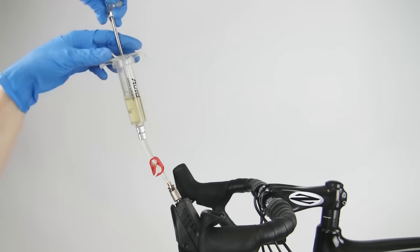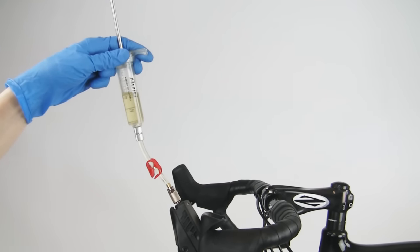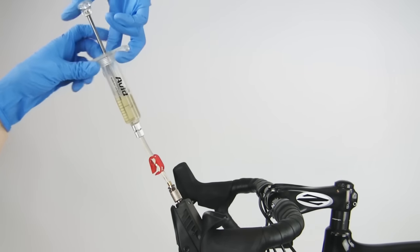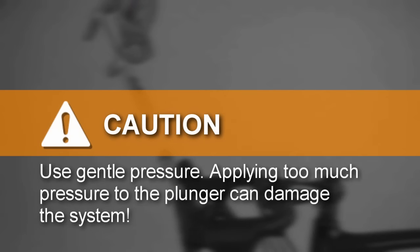Open the clamp on the lever syringe. Pull out on the lever syringe plunger, then gently push in on the plunger to pressurize the system. Use gentle pressure. Applying too much pressure to the plunger can damage the system.